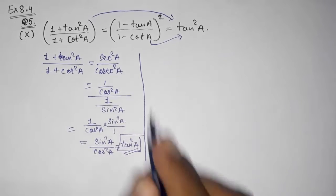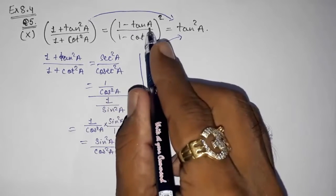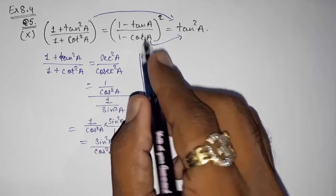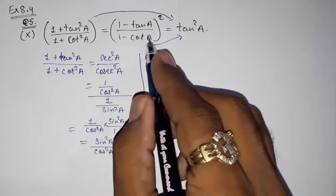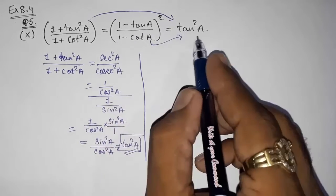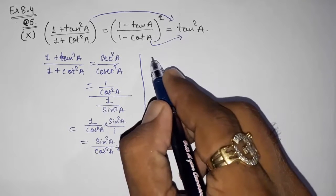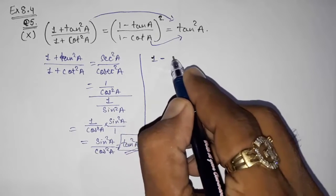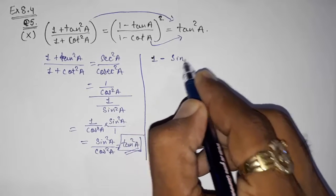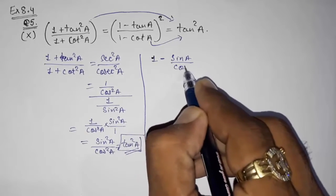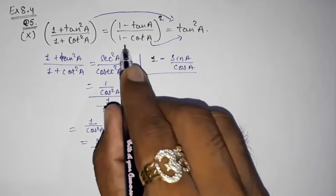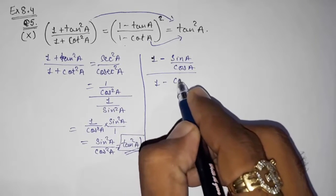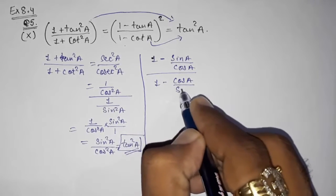Now we are going to prove the second part: (1 - tan a)/(1 - cot a) whole square equals tan²a. Directly converting: 1 - tan a becomes 1 - (sin a / cos a), upon 1 - cot a, that is 1 - (cos a / sin a).